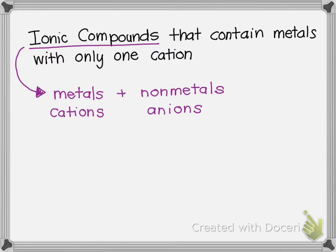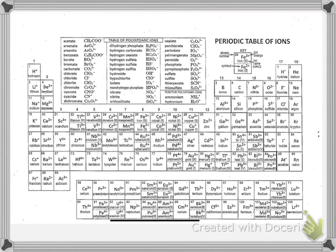And then the second thing in this title here that I would consider is what does it mean to be a metal that only forms one cation? So to illustrate this, I included this reference table, which you can get in your canvas shell. And in this reference table, it's a periodic table, but it has ions.